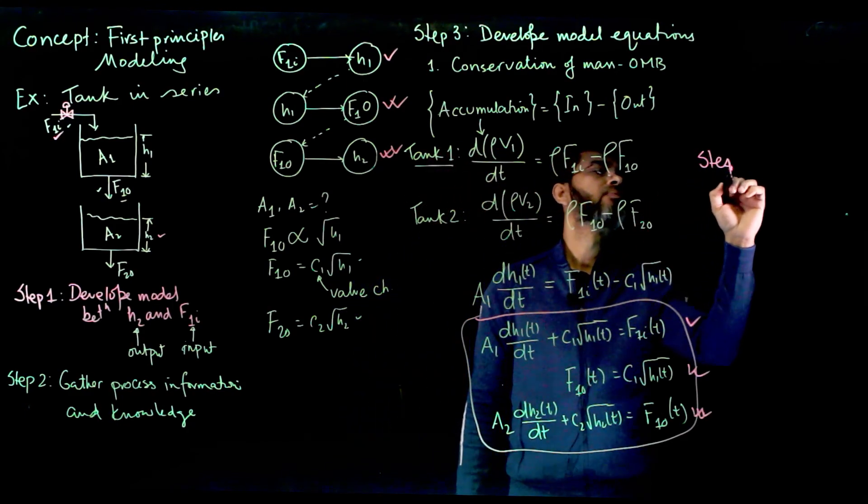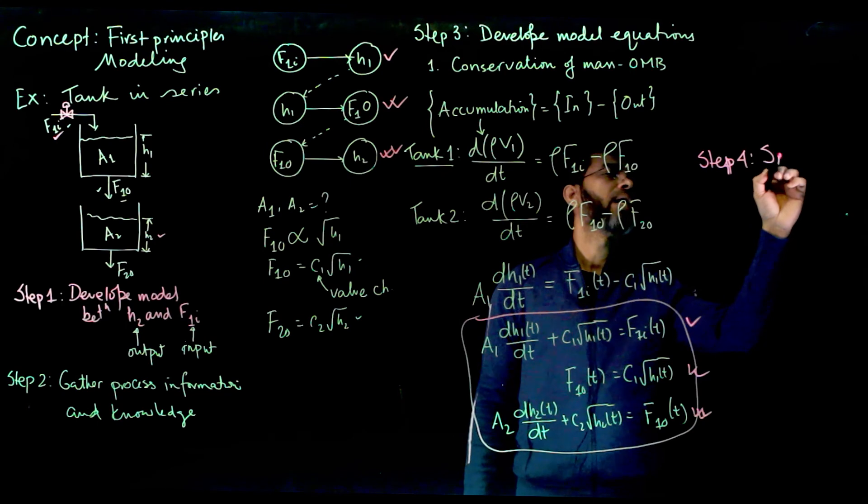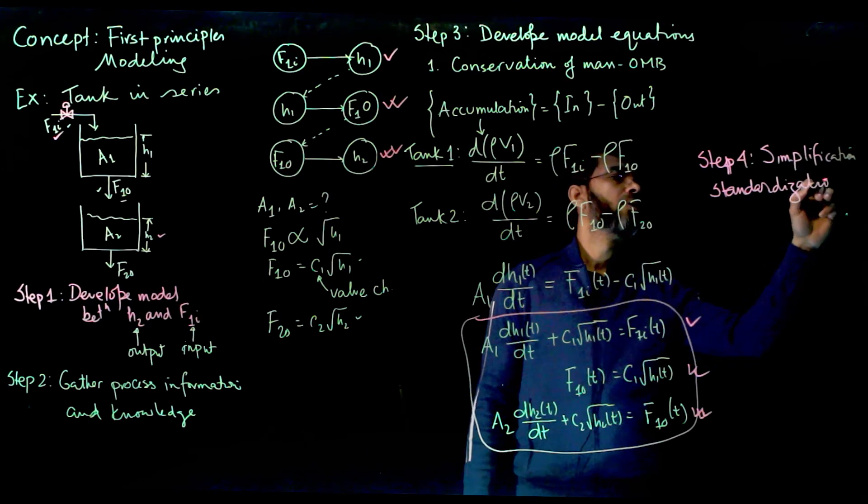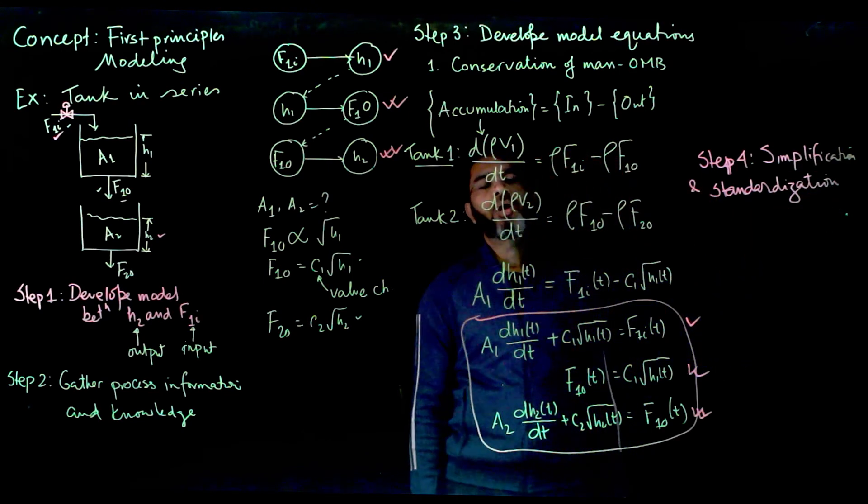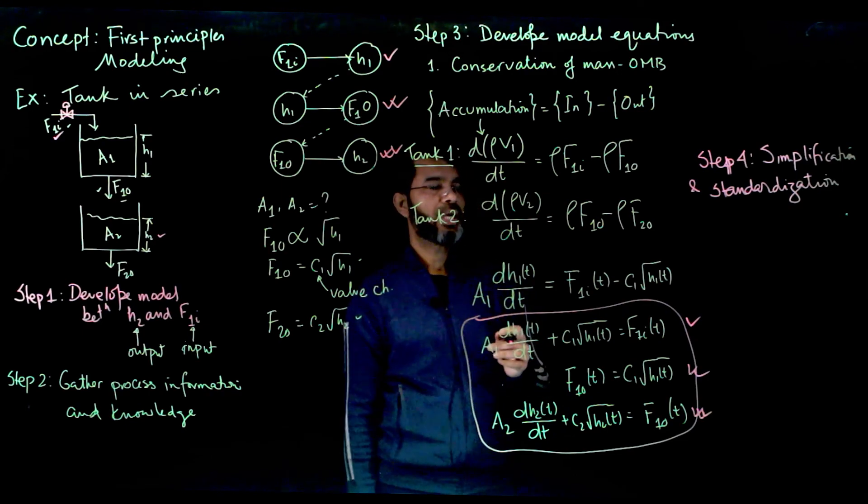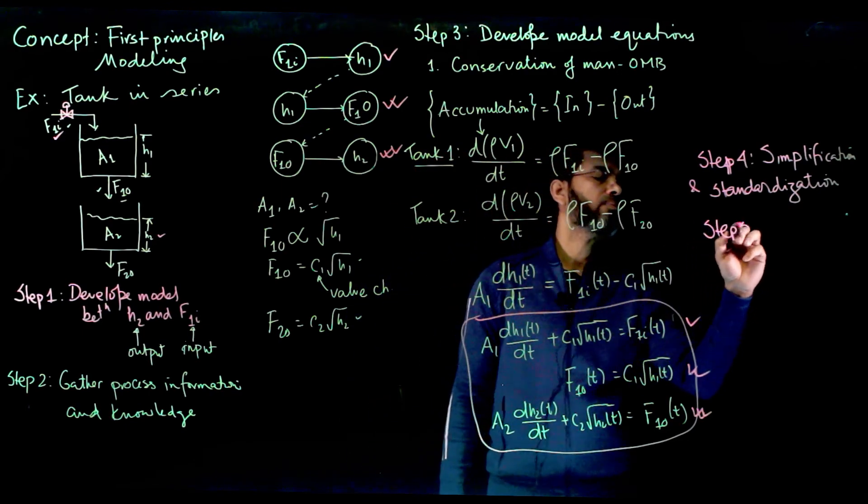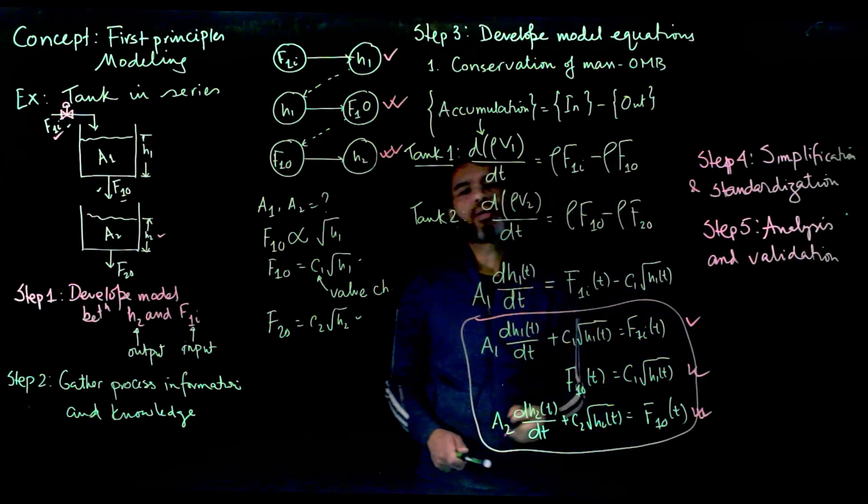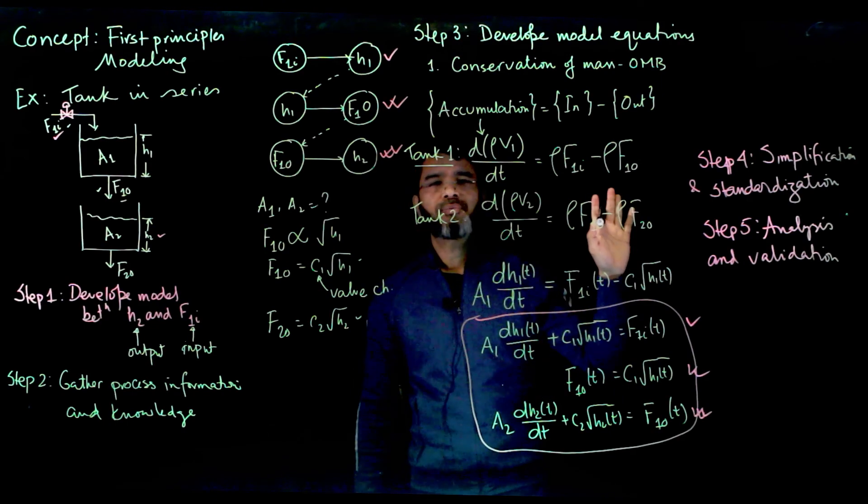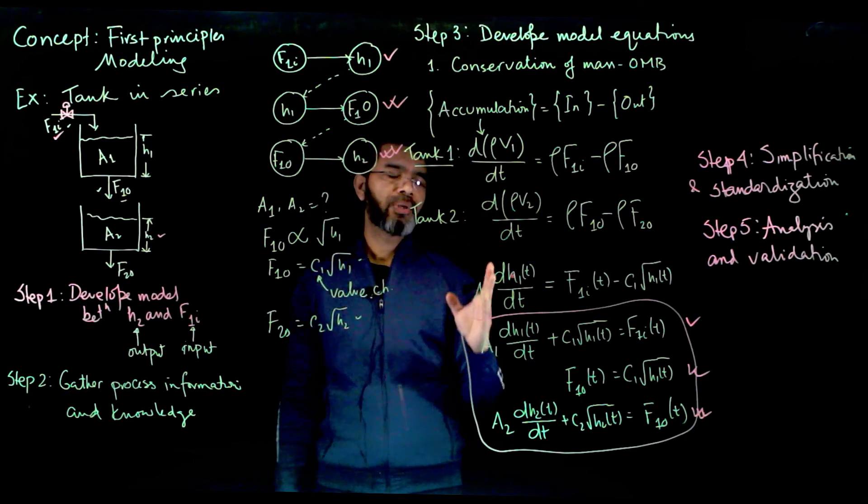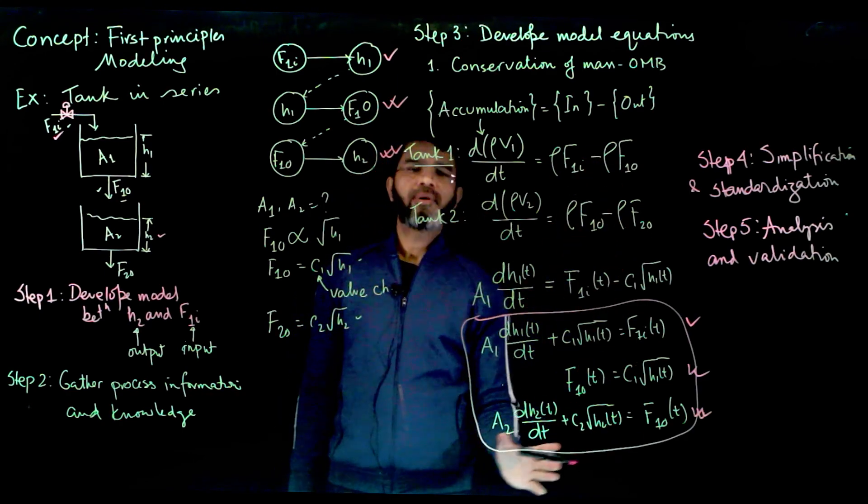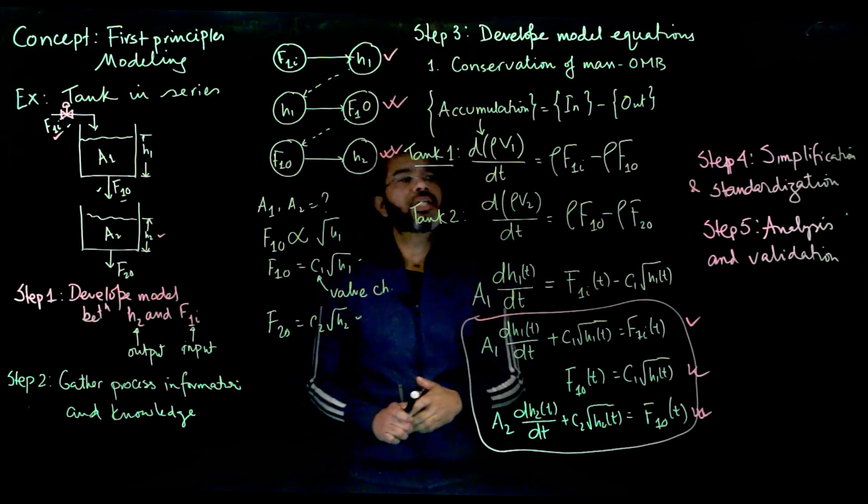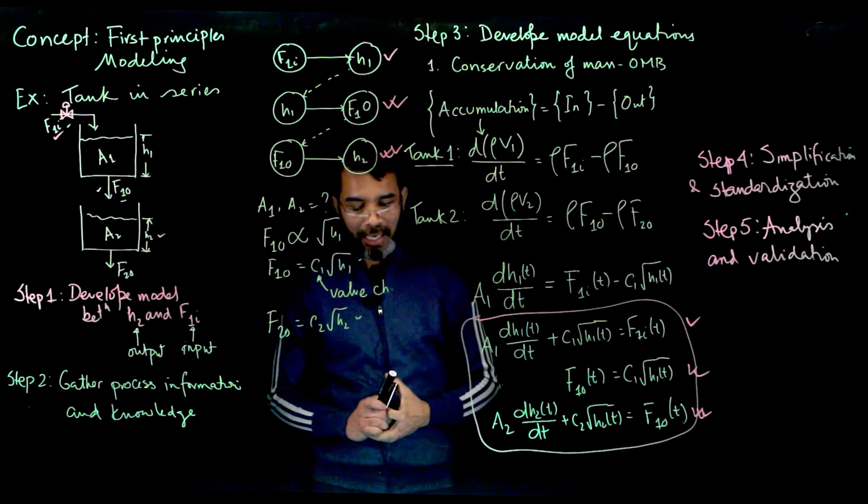So step 4 will be this simplification and standardization. So we need to express the model in a standard form. We will see how to do that and step 5 will be analysis and validation. So that will cover the solution. Now I am not going to step 4 and 5. We will cover a few more examples to derive this model equation which is mainly the bulk part in step 3 and then we will go to the solution and simplification in the next few weeks time.